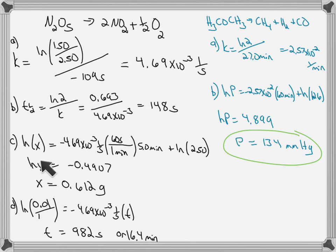Then I'll do something similar to what I did here, but now using pressures instead of grams. The natural log of the pressure at time t is equal to negative k multiplied by t plus the natural log of the amount at time zero. The natural log of the pressure at time t is 4.899. I take the anti-natural log of that. That's e to the 4.899, and I get 134 millimeters of mercury.